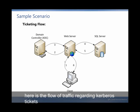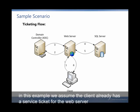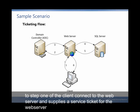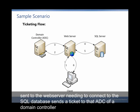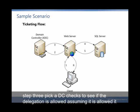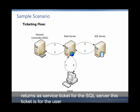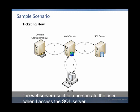Here is the flow of traffic regarding Kerberos tickets. In this example, we assume the client already has a service ticket for the web server. Step 1: the client connects to the web server and supplies a service ticket for the web server. Step 2: the web server, needing to connect to the SQL database, sends the ticket to the KDC on the domain controller. Step 3: the KDC checks to see if delegation is allowed. Assuming it is allowed, it returns a service ticket for the SQL server. This ticket is for the user, and the web server uses it to impersonate the user when they access the SQL server.